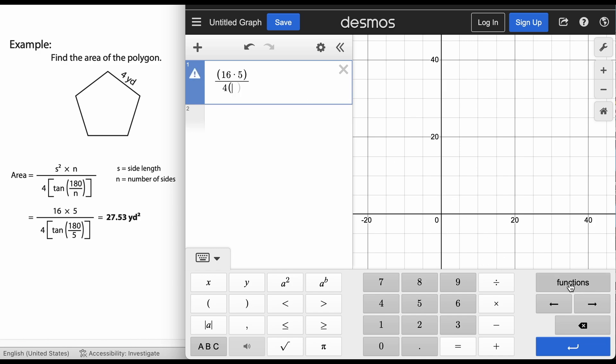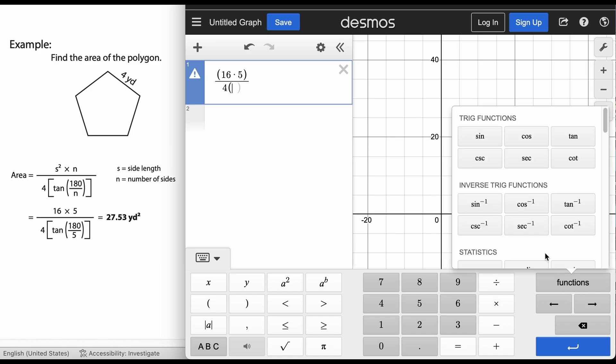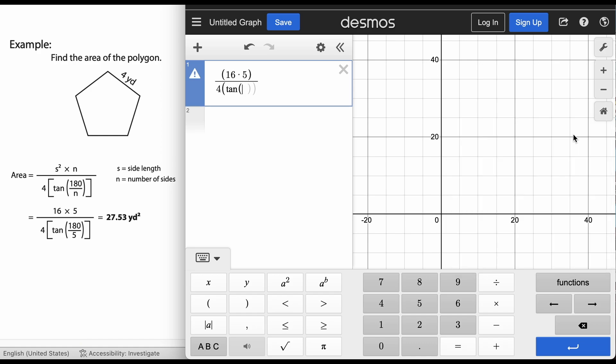Now to get tangent I'm going to have to hit the functions right here. So I hit functions and then you see a bunch of functions come up, but the one we need is tangent right there in the corner. So I'm gonna hit tangent.